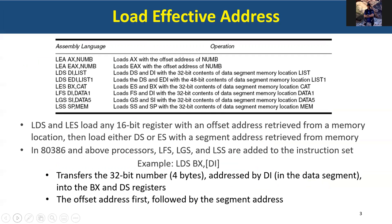There are other load effective address instructions supported by Intel architectures. We have LEA, and there is also LDS — load data segment — and LES. LDS loads a 16-bit register with the offset address retrieved from a memory location, and loads the DS register with the segment address. The offset goes into a register like DI or AX, whichever register you are using.